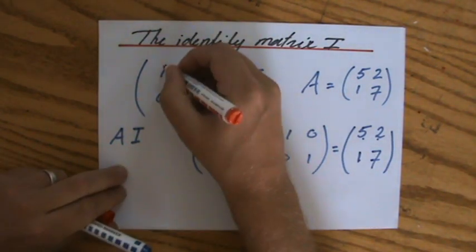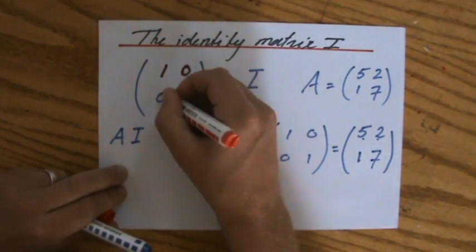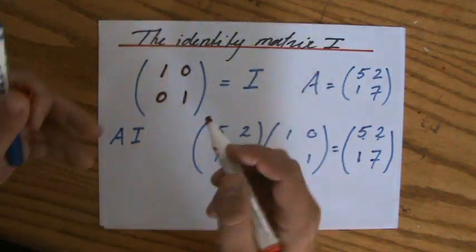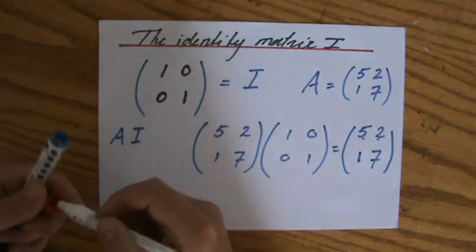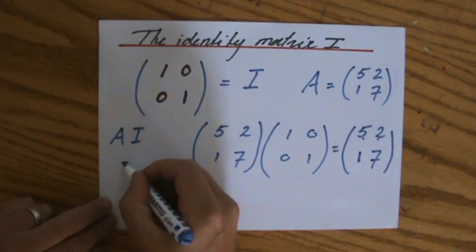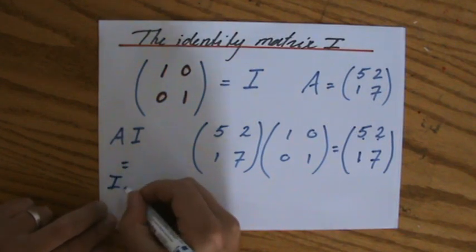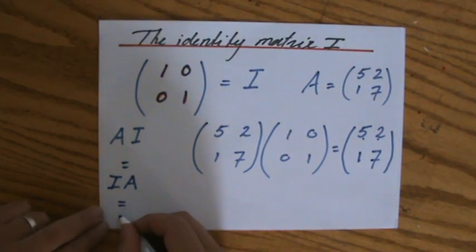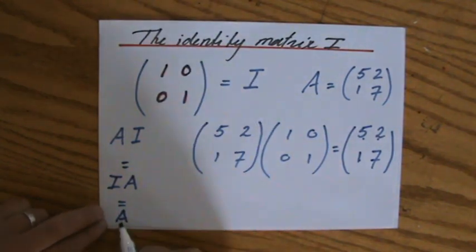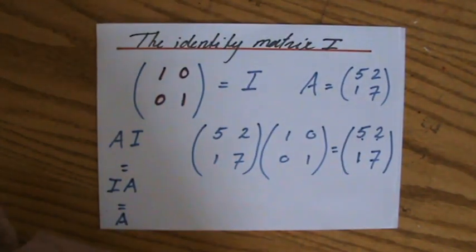It's a matrix of order 2 by 2, [[1, 0], [0, 1]]. And if you multiply that by any other matrix, that equals IA, and that equals the original matrix A, always. Identity matrix.